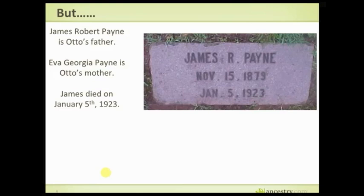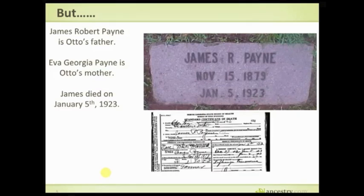Here's the proof I have for James Payne — he died in 1923, and I also have his death certificate. When it comes to when James Robert Payne died, the death certificate is probably very accurate. It's an official document recorded at the time of his death, and the person who reported it had direct knowledge of his death, so we can feel really good about that.